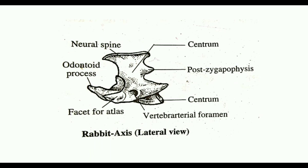The neural spine of axis is long and compressed. The transverse processes are small and backwardly directed. At the base of the transverse process, there are vertebral arterial foramina.